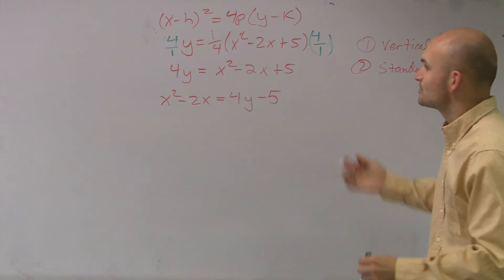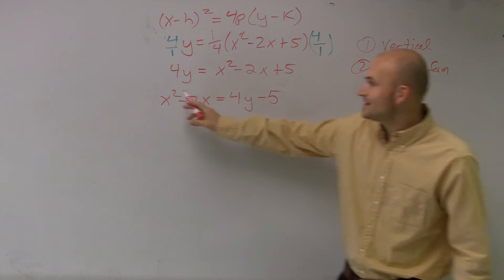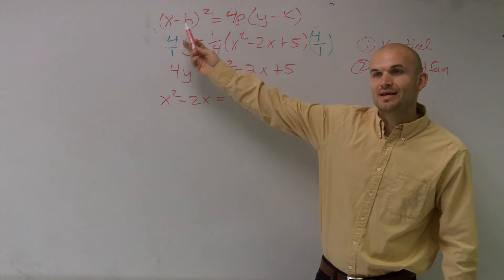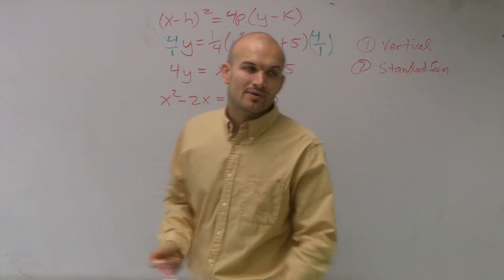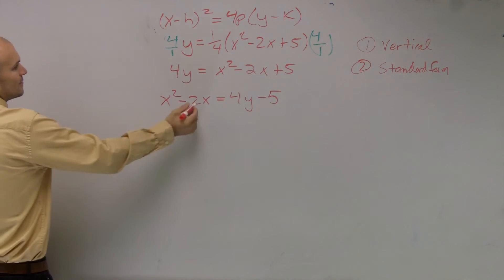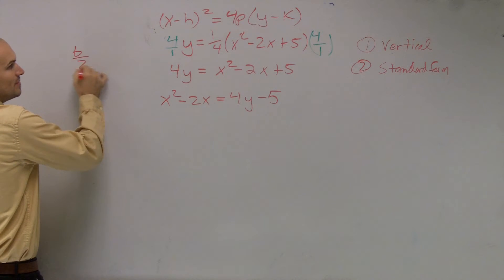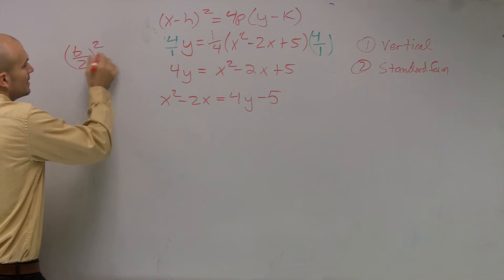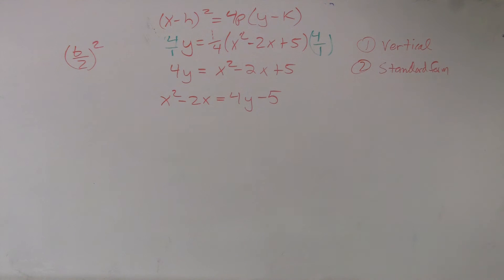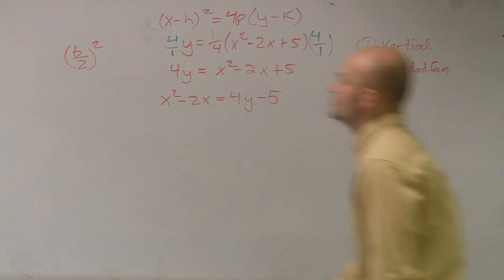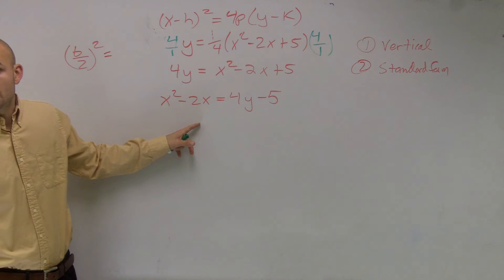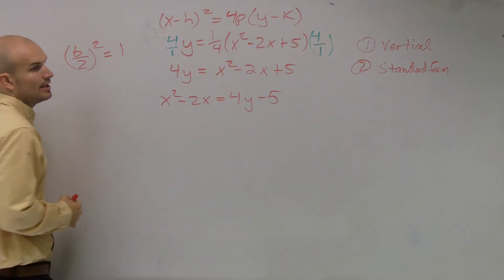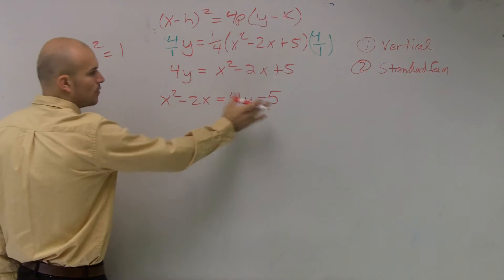Now we come to our favorite part in mathematics. We have x squared minus 2x, and we want it to look like a squared binomial. So to do that, we have to complete the square. We take our b, which is negative 2, and compute b divided by 2, squared. So we take negative 2 divided by 2, which is negative 1. Negative 1 squared equals 1. So now I need to add 1 on both sides.